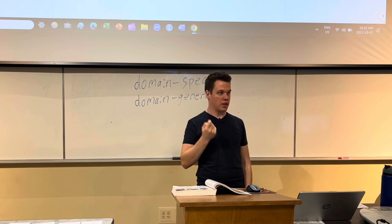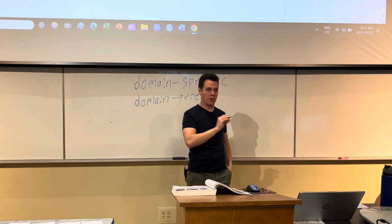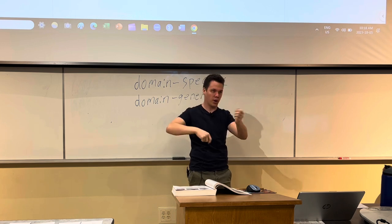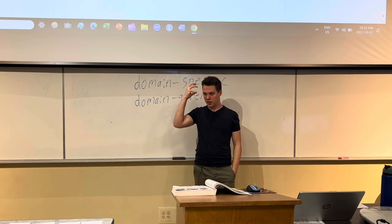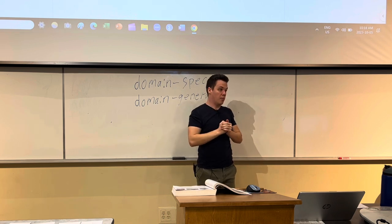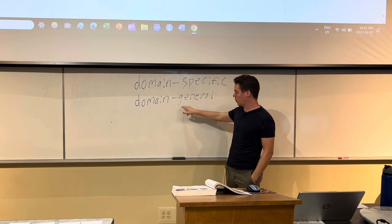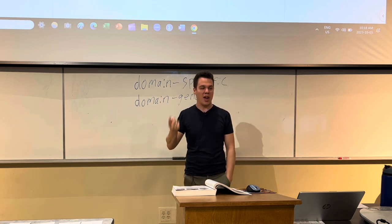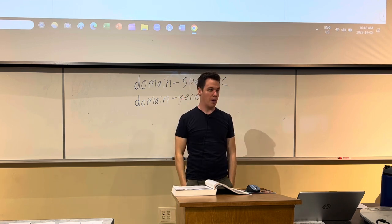One ongoing debate in psychology is how many domain-specific adaptations we have. Evolutionary psychologists tend to say the human mind is like a Swiss army knife — with lots of domain-specific abilities designed by evolution. Whereas behaviorists think we have more domain-general adaptations. They basically think we have one domain-general adaptation — the ability to be conditioned — and everything else emerges from that. We come in with not very much specificity given to us by evolution.